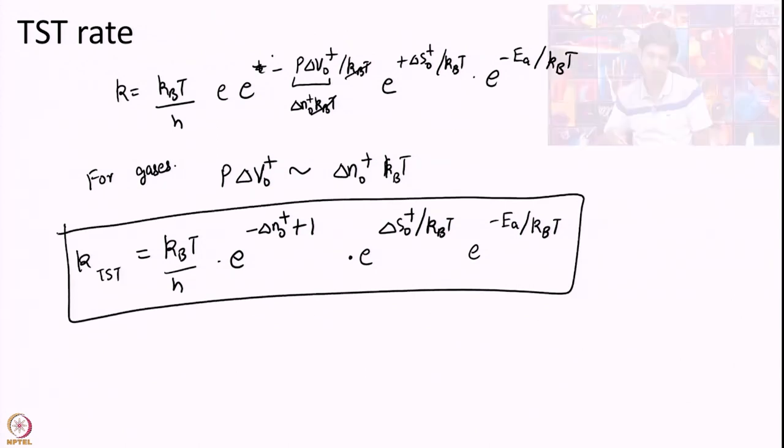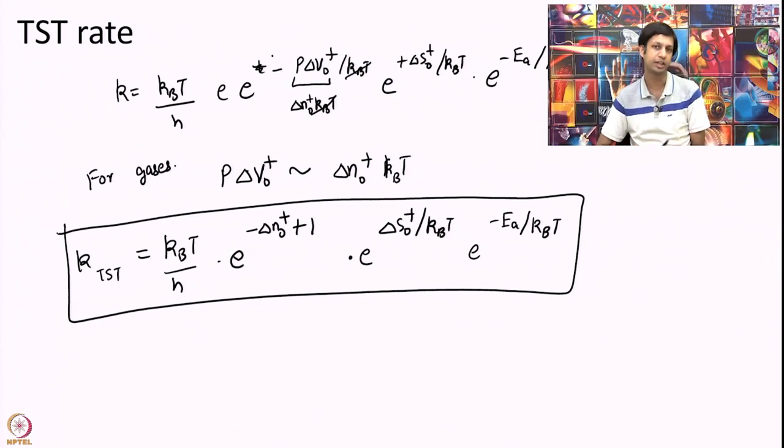So, this is another common relation people often use to calculate rate constants. Here you do not have to calculate partition functions. Here you have to calculate free energy, this entropy, I am sorry. Here you have to calculate this entropy difference, activation energy, and delta N. So, if you can calculate that somehow experimentally, then you can calculate the K TST. While partition functions require a bit more rigorous numerical calculation. You have to be much more careful with partition functions. It is just an alternate way. I am not saying this is the better way, but a different way of calculating rate constant.